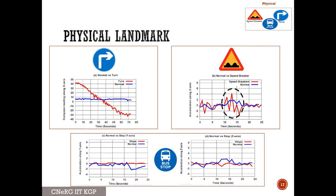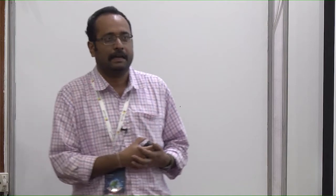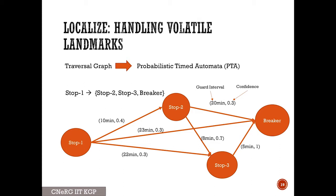Now there are a few issues. Landmarks can be different types — physical landmarks like turns, speed breakers, and bus stops. For turns and speed breakers it's fine because they are static in nature. But in the Indian context, bus stops are sometimes volatile in nature, because buses may or may not occur in the route every time — buses sometimes skip designated bus stops. Due to all these factors, these landmarks can be volatile in nature, and that's what we need to take care of.